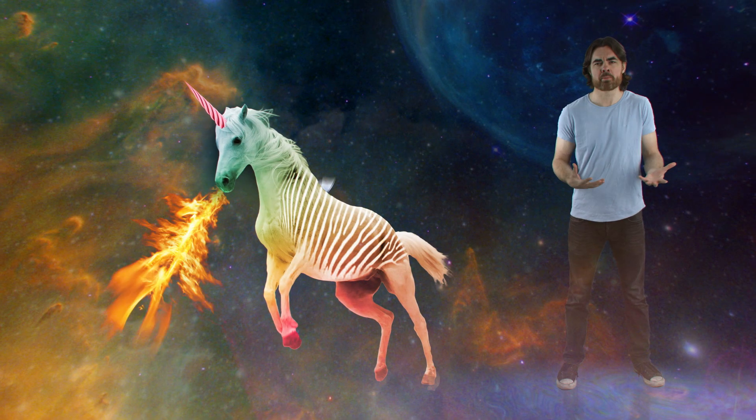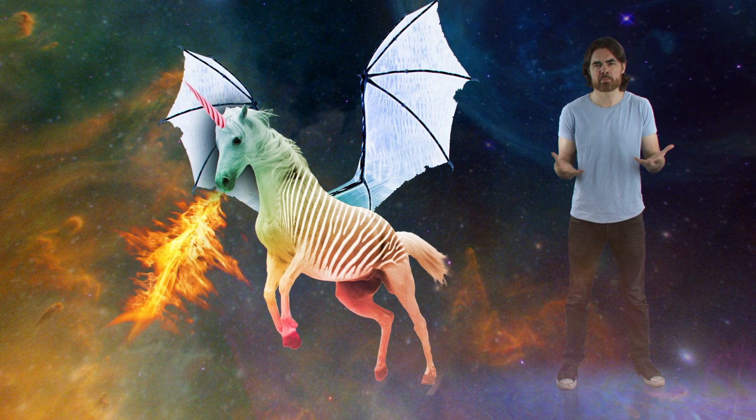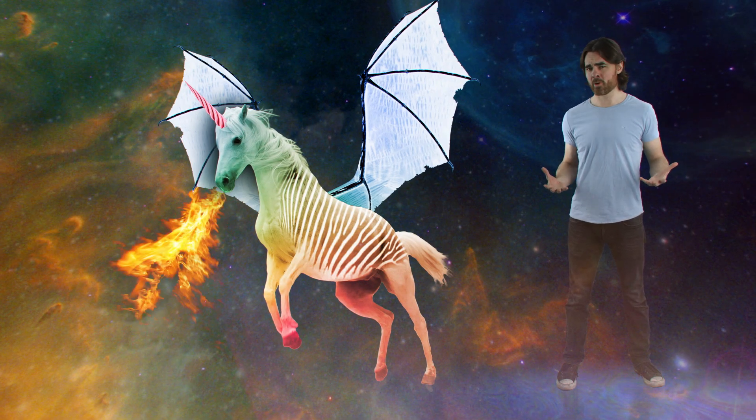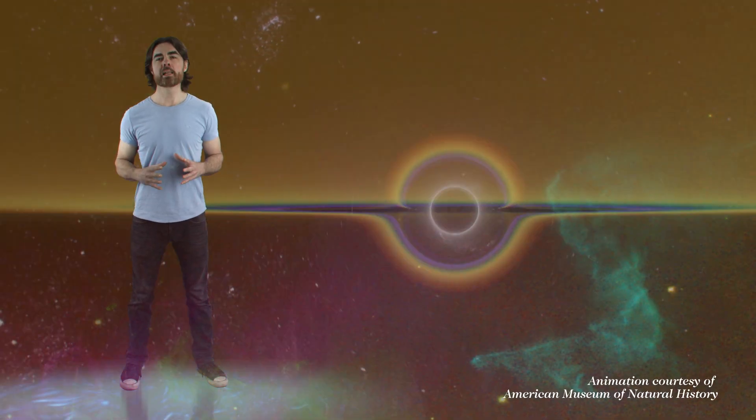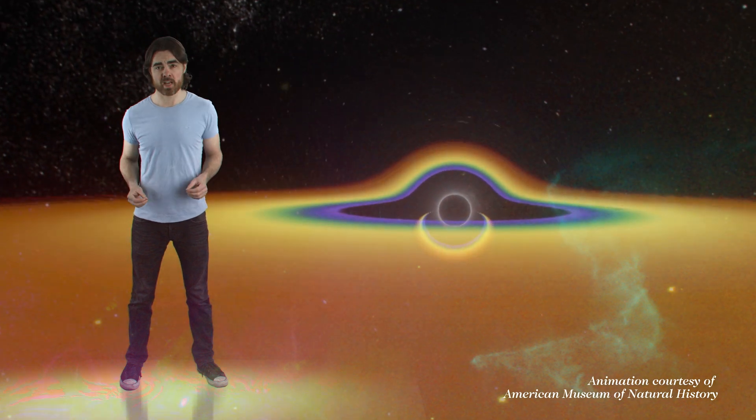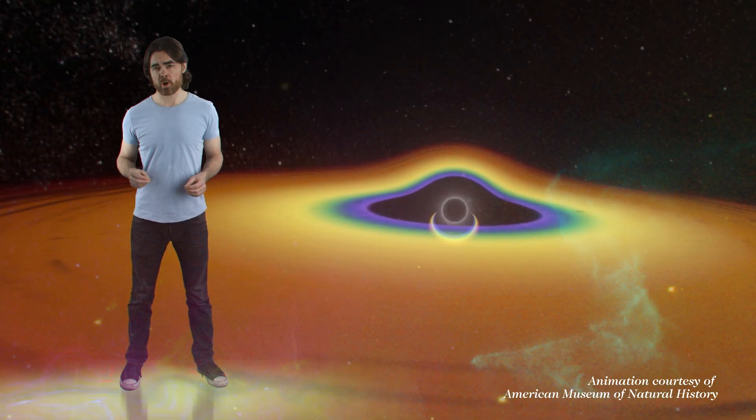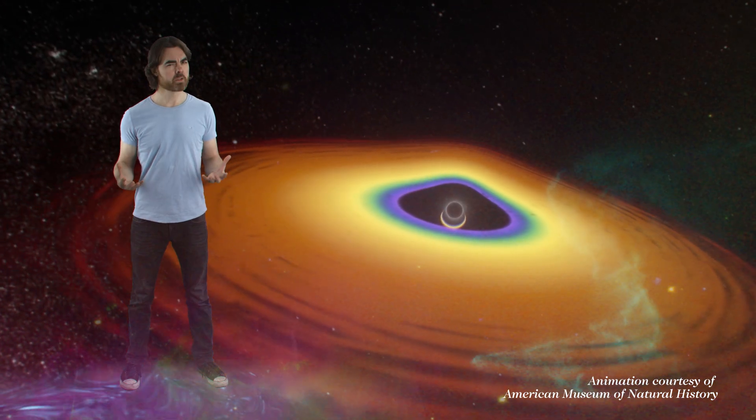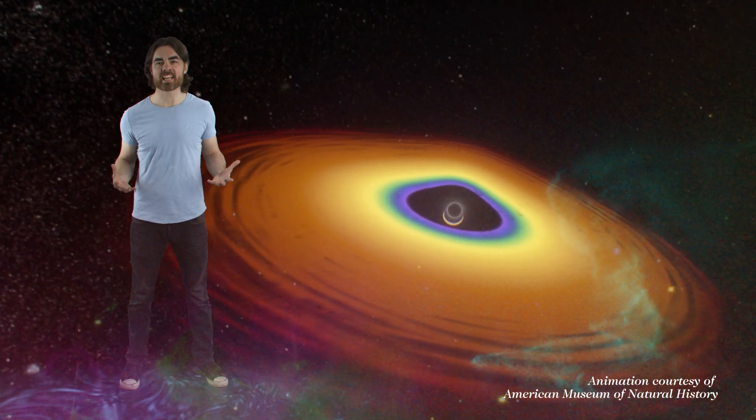Of course, everyone knows that quasars are the most awesome of all. They have everything. They're like the fire-breathing bat-winged vampire rainbow zebra unicorns of astrophysical phenomena. They don't just have a black hole, they have a supermassive black hole, millions to billions of times the mass of the sun, surrounded by a solar system-sized whirlpool of superheated plasma that shines brighter than an entire galaxy.